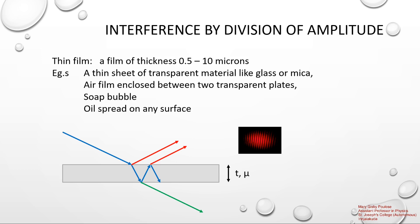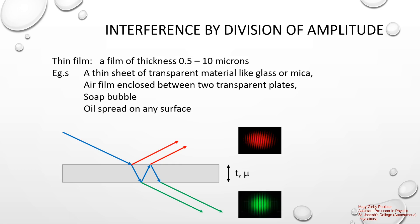From the refracted ray we can also have another ray refracting into the outer medium. These two green rays can also interfere and produce an interference pattern. So the red rays show an interference pattern by reflection, and the green rays show an interference pattern by refraction. In this chapter we will mainly deal with interference by division of amplitude due to reflection.